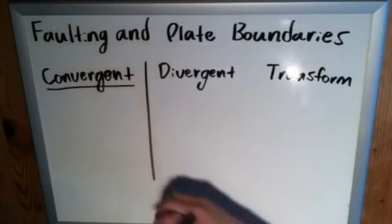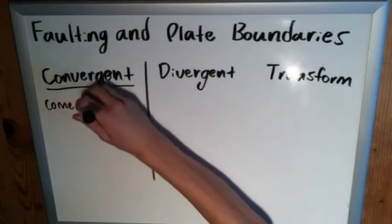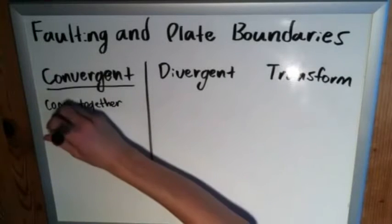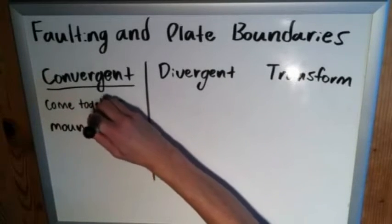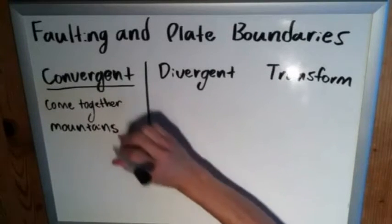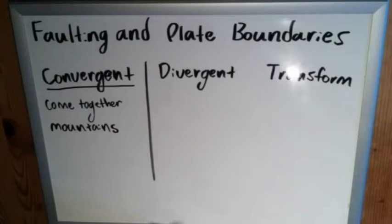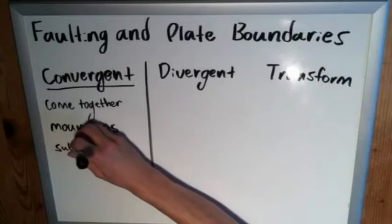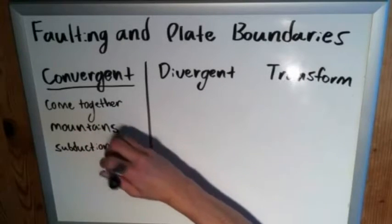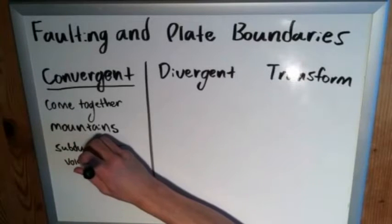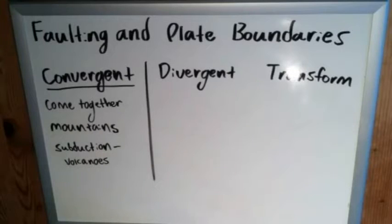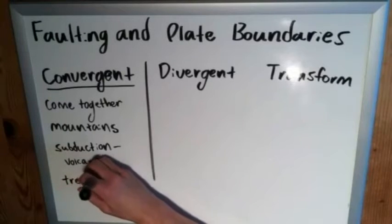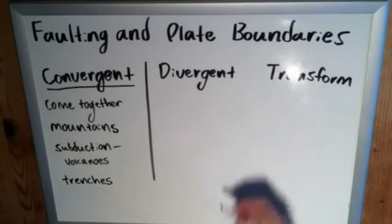Convergent, as the name may imply, is where two plates come together. As a result, you'll usually see mountains if it's two continental plates — land forced up when they push together. If it's a continental and an oceanic plate, the oceanic plate, since it's more dense, will sink beneath the continental plate in what's called a subduction zone, usually marked by volcanoes on a nearby coastline. If it's two oceanic plates interacting, then we'll have trenches.